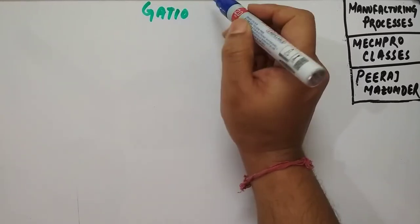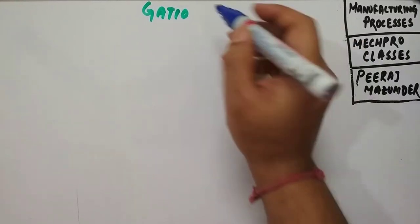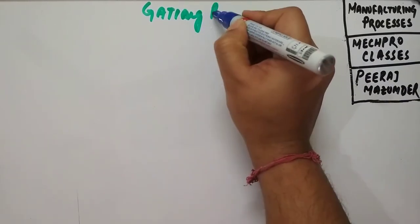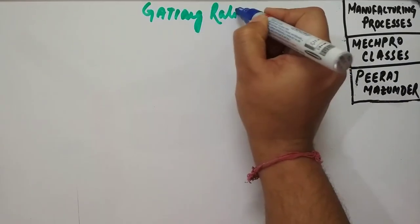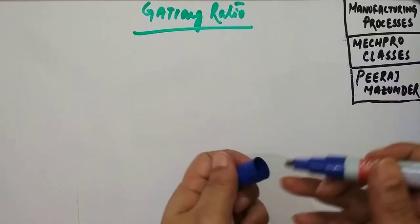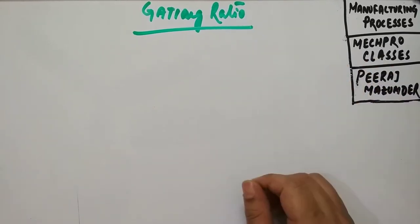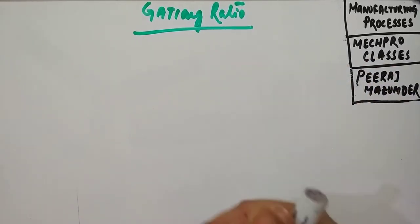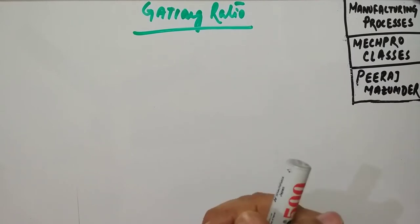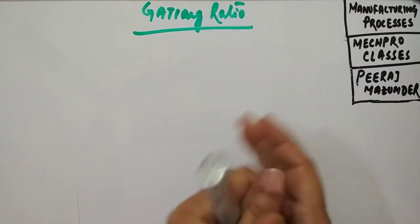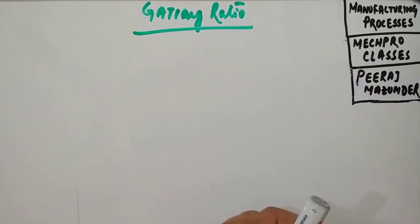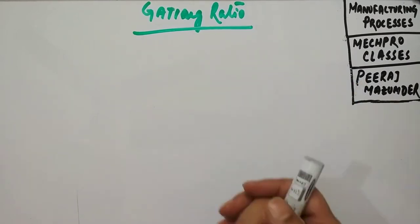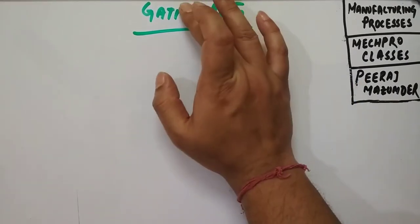We earlier already covered the different topics of casting along with different special casting processes, foundry tools, pattern and casting defects also. So now we will be learning some of the numerical portions of castings as well. So we will be starting with gating ratios.